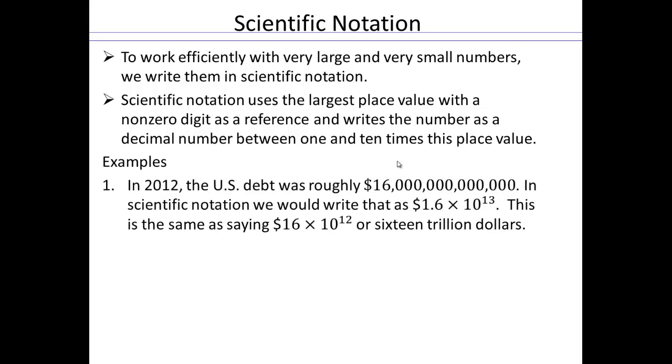For example, in 2012, the US debt is approximately $16 trillion. So take a look here. You have these three zeros—1,000. This is going to be million, billion, trillion. To write that in scientific notation, 1 is our largest place value. So we would write the number as 1.6, and then the place value is going to have 13 places. So that's 10 to the 13.